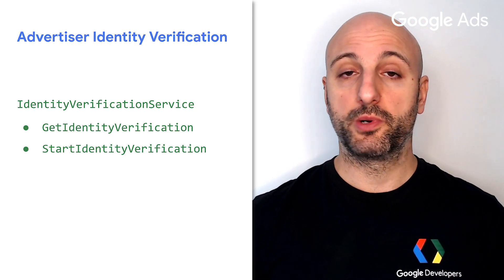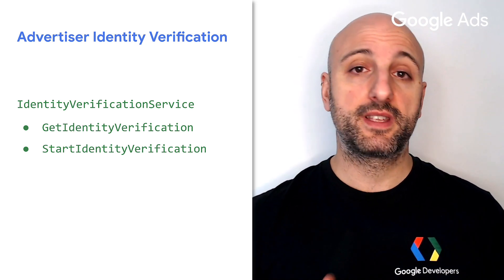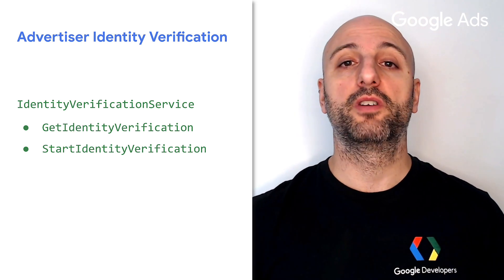Once the identity verification process has been started, you can retrieve its status by calling get identity verification again. If you've been following these release videos for a while, you may remember that back in version 12, we introduced a new field for campaigns called primary status, that allows you to retrieve precise and clear information about the reasons why a campaign may not be serving or not serving optimally. In version 16, we have added the same type of field for the ad group and the ad group ad resources, so that you can obtain the same type of information for specific ad groups and ads inside a campaign.